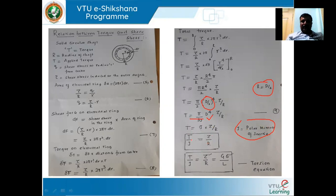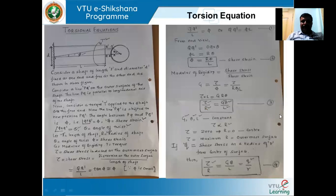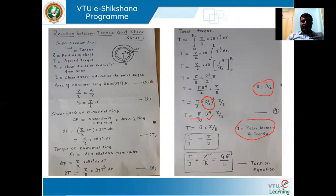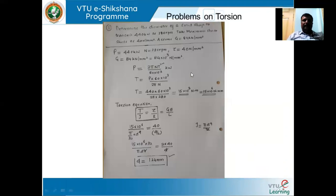Combining with the previous expression, the complete torsion equation is: T by J equals tau by R equals G theta by L. This equation is called the torsion equation, giving the relation between torque, shear stress, and angle of twist. It is very important in designing a shaft to find its diameter.